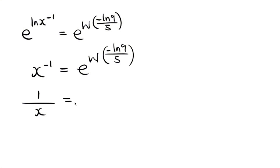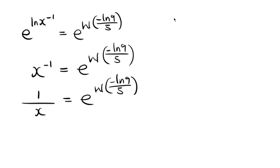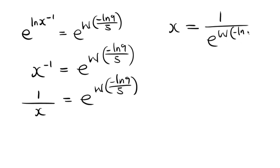x^(−1) is just 1/x. I'm looking for x, not its inverse, so I take the inverse of both sides. The inverse of 1/x gives x, and the inverse of the right-hand side gives 1 over e^(W(−ln(9)/5)). So our final answer is x = 1 / e^(W(−ln(9)/5)).